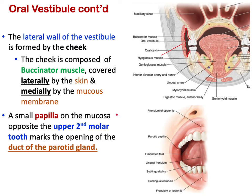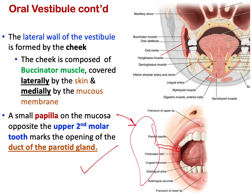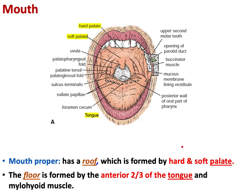An important landmark is the parotid papilla, located opposite the upper second molar tooth. There is a small opening of the parotid duct here. Note that the opening of the parotid duct is in the oral vestibule, not in the oral cavity proper.